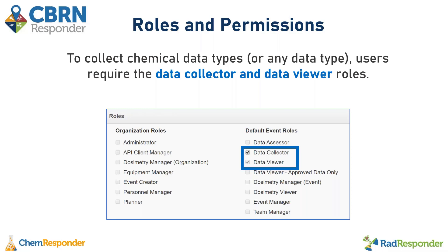This will be very familiar for those of you who have used RadResponder in the past. The data collector and data viewer roles are the roles you need in the event in order to collect data records — any data record, including the chemical data types. Your responders or whoever is collecting chemical data types just needs to have that data collector role.